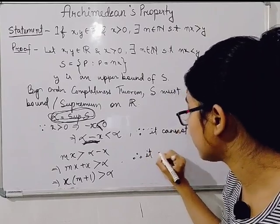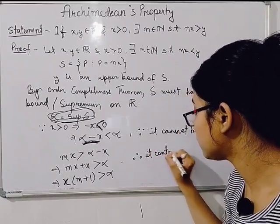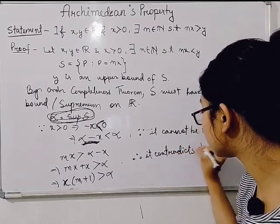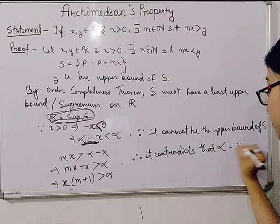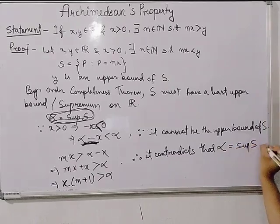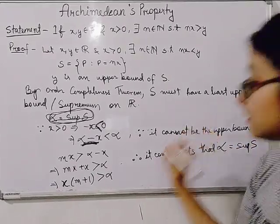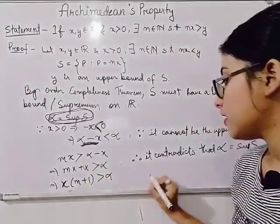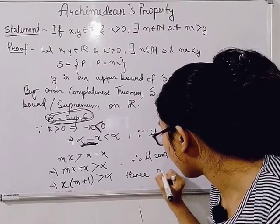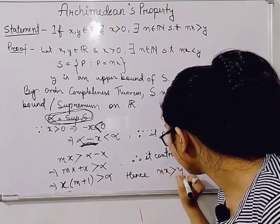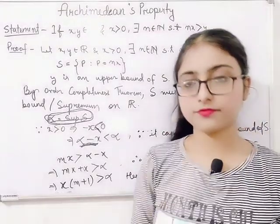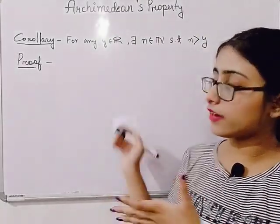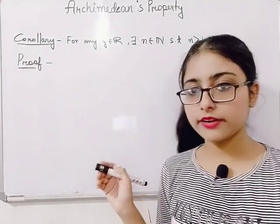Therefore, it contradicts that alpha is equal to the supremum of S. And this contradiction makes our assumption wrong. Hence, nx is greater than y. Now, we are also having a corollary, so we will also prove this corollary.